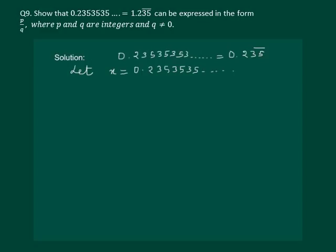Our first step is to assume: let x is equal to the given number. Now since 35 is getting repeated, hence we will multiply both sides by 100.